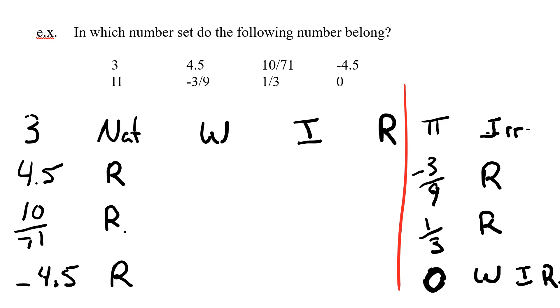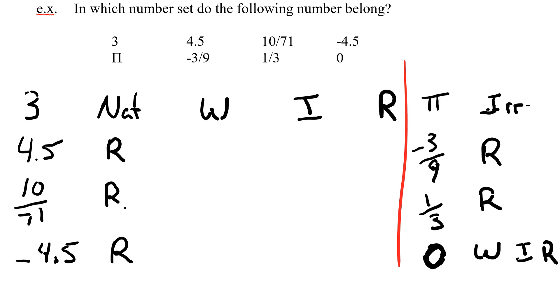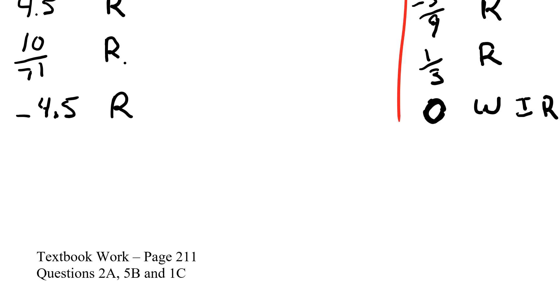So, labeling numbers will help us throughout this unit. Let's go to our textbook, page 211. Let's do 2 from the A's, 5 from the B's, and 1 from the C's.